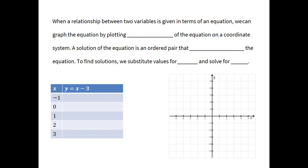We graph the equation by plotting solutions of the equation on a coordinate system. A solution is an ordered pair that satisfies the equation. To find solutions, we can substitute values for x and solve for y — that's the typical way — but you can also substitute values for y and solve for x. I like to form a t-chart to organize the solutions, with x values in the left column and y values in the right column.